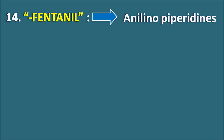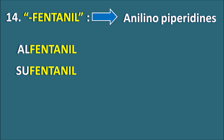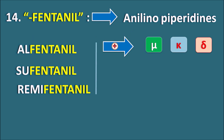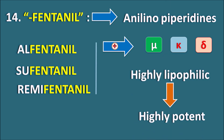Fourteenth one is the suffix -fentanyl. This indicates they are anilinopiperidines, which are opioid drugs. We have drugs like alfentanil, sufentanil, and remifentanil. These drugs act on opioid receptors including mu, kappa, and delta receptors, producing analgesia at central, spinal, and peripheral levels. These drugs have high lipophilicity resulting in high potency. Among the opioids, the fentanyl class of drugs have high potency and high affinity for the mu receptors.